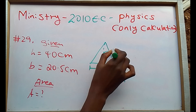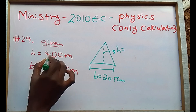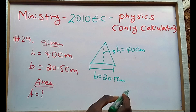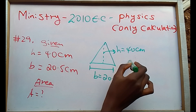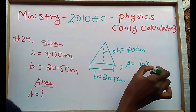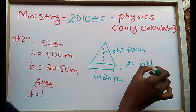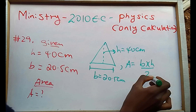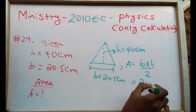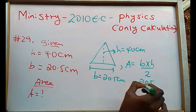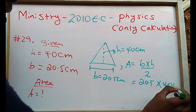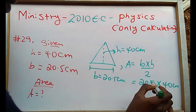And this will be the height — height of a centimeters. So the area equals base times height divided by 2. Base of a centimeters, height of a centimeters, height of a centimeters times divided by 2.